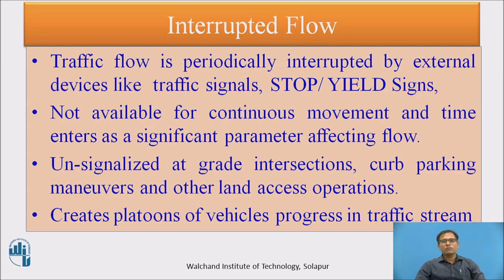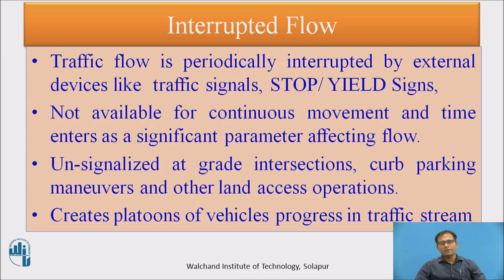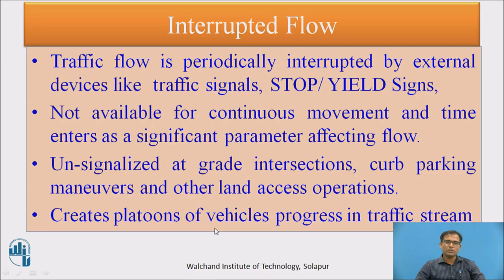These interruptions create platoons of vehicles progressing in the traffic stream. A platoon is a bunch of vehicles moving together. For example, when vehicles stop at an intersection waiting for a green signal, once the green is given, a bunch of vehicles moves together, and the next bunch moves at a distance apart. The spacing between one platoon and another is larger, which means the flow decreases again.